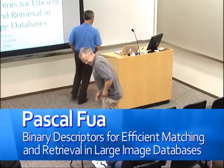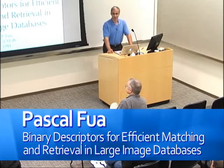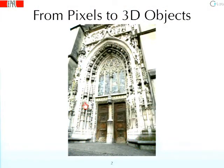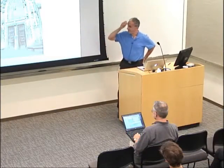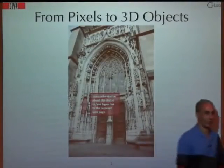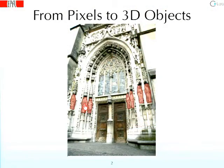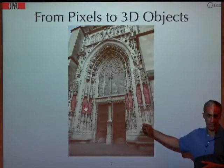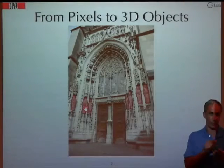Today I'd like to talk about our work on binary descriptors. To give you context, one of the things we are all interested in is being able to run around the city, take pictures of landmarks with our cell phones, point at a particular statue, and have information pop up about it. This means we need a model of, in this case, the cathedral — it has to be annotated and precisely registered with the image we just took, so that the phone knows that when you pointed at a particular pixel, you were pointing at that particular statue.